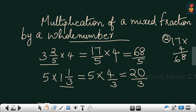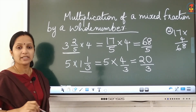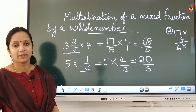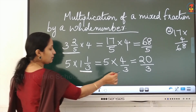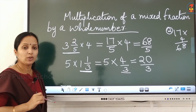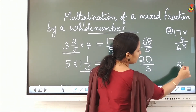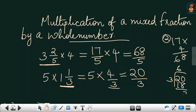Children, if there is a mixed number in your question, first convert that mixed number into an improper fraction, then do the multiplication. In the second question, we converted the mixed number into an improper fraction first, then did the multiplication. If the answer is an improper fraction, convert it into a mixed number using the formula: quotient remainder by divisor.